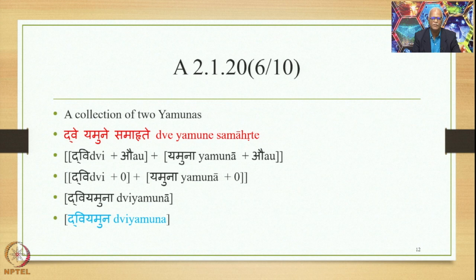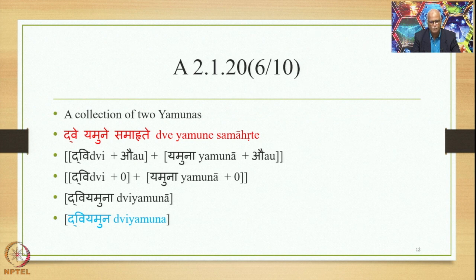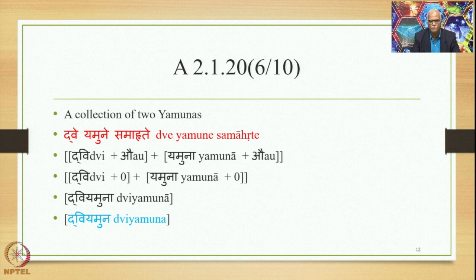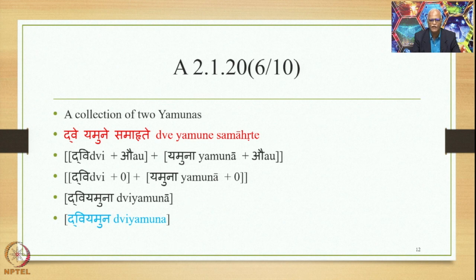Similarly, when the meaning to be conveyed is a collection of two Yamunas, the Laukika Vigraha is Dve Yamune Samarhate. The Alaukika Vigraha is Dvi + Au + Yamuna + Au. Then we get the Samasa Saudhnya because of 2.1.20, followed by the Pratibhadika Saudhnya (Vaikrit Taddhita Samasascha). We apply Supodhatup Pratibhadika Yoho and delete both Supas, giving Dvi + 0 + Yamuna + 0, which joined gives Dvi Yamuna. This is an Avyaibhava Samasa denoting neuter gender, so Raspo Napumchake Pratibhadika Sya applies and shortens the long A in Yamuna, giving the finally derived compound Dvi Yamuna — a collection of two Yamunas.